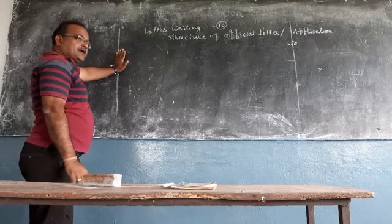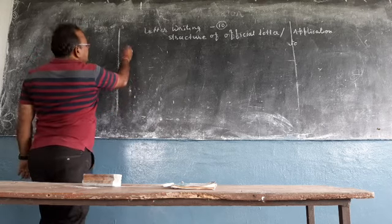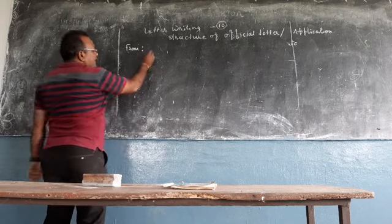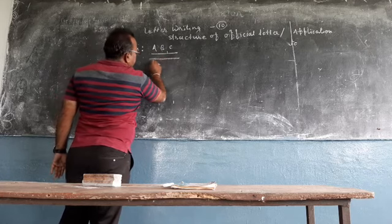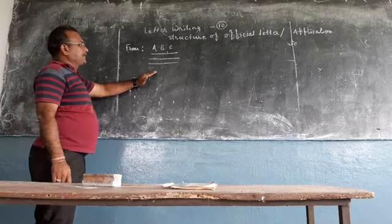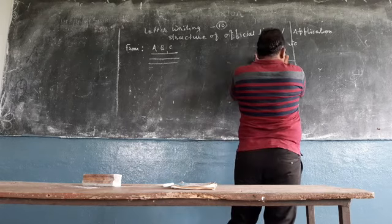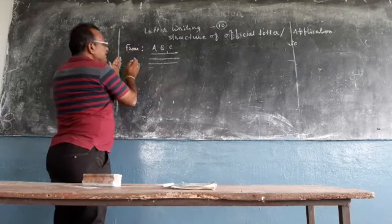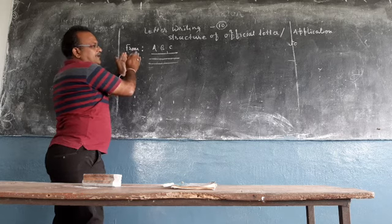We have to write name of sender and address in this column like this. We have to write the prompt, then column, we have to put your name A, B, C, then write the address in two or three lines. The same thing we have written in this column in case of personal letter. Same thing we have written in this column in case of official letter as well as letter of application.